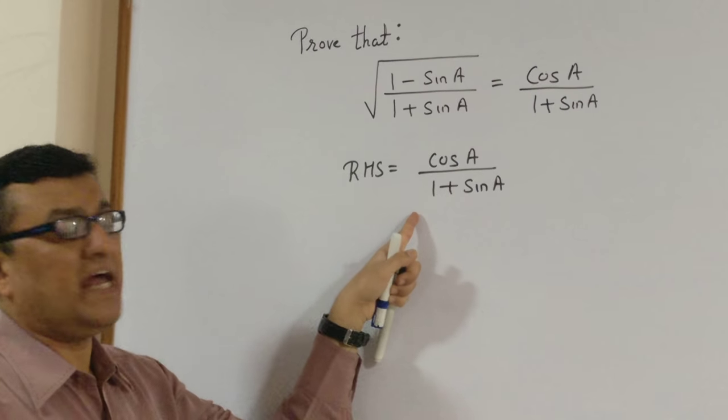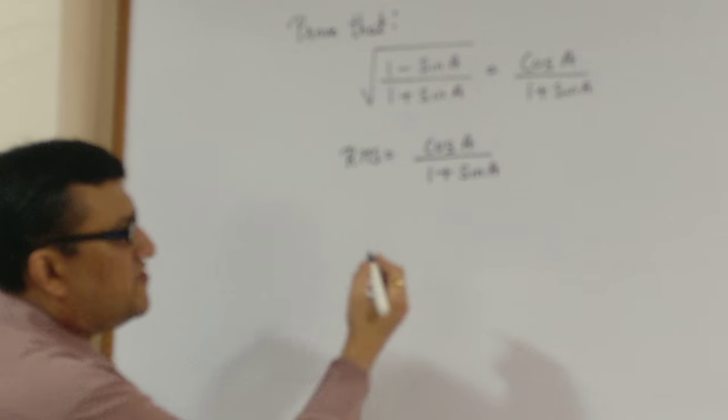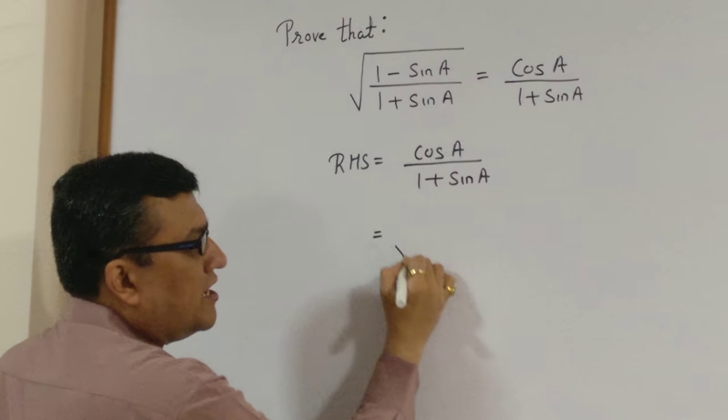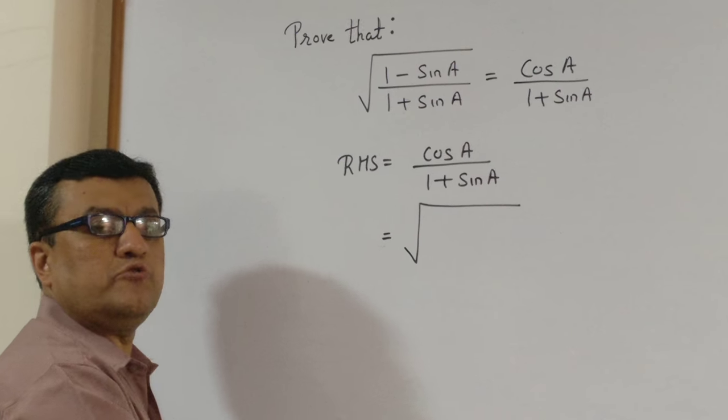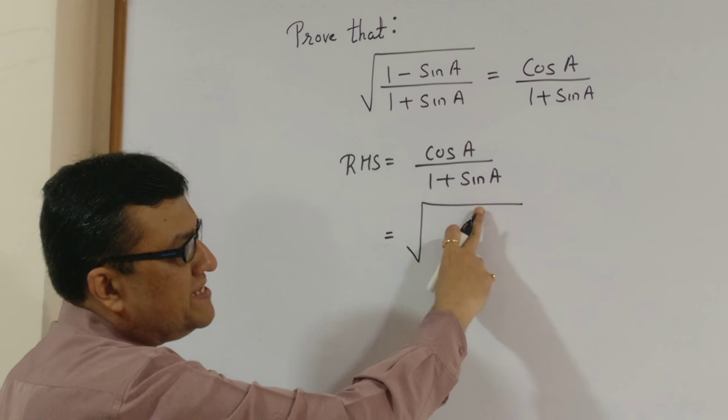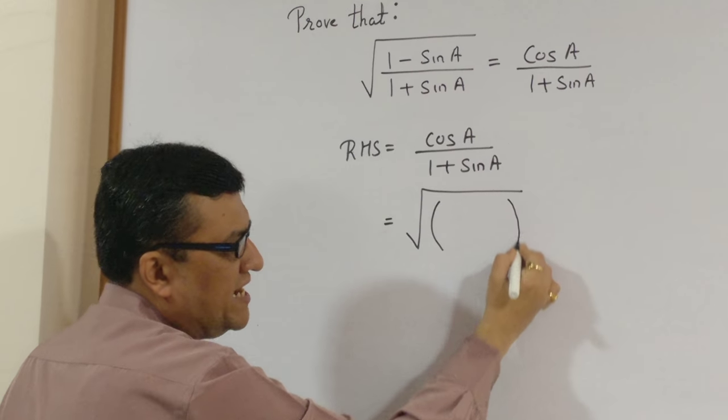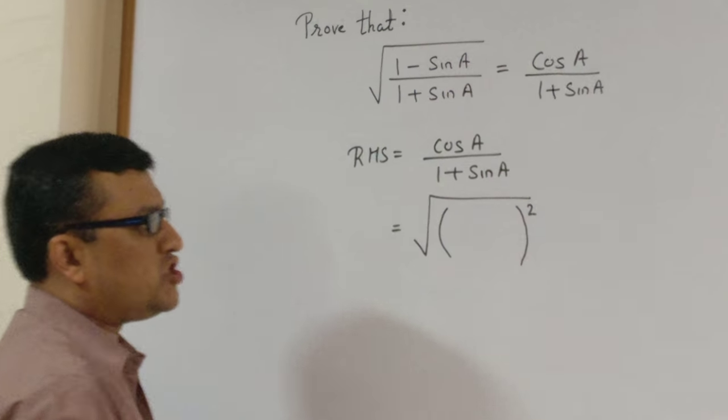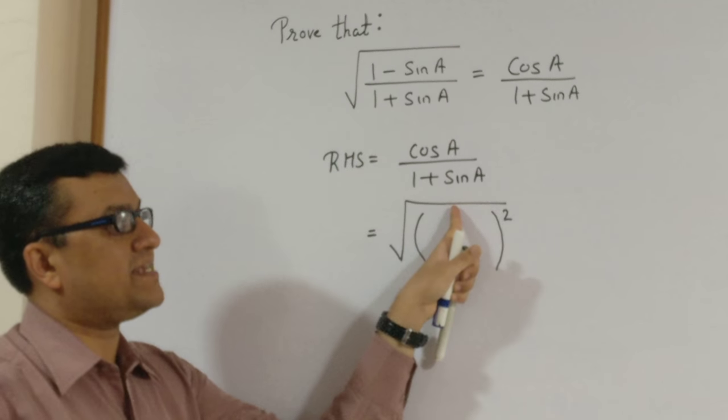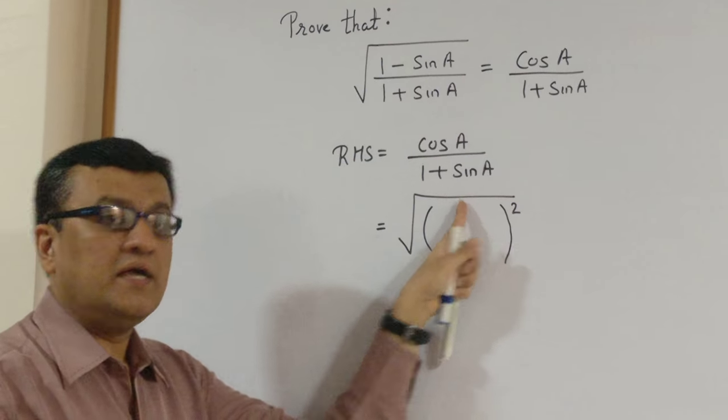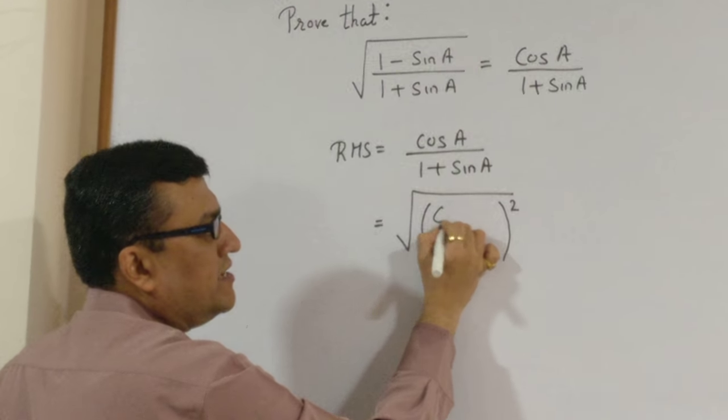So the very first step, I take this under root sign. In order to compensate this under root sign, we take square, thereby this square and square root gets canceled off, nullify each other, and now we place the entire RHS, cos A upon 1 plus sine A.